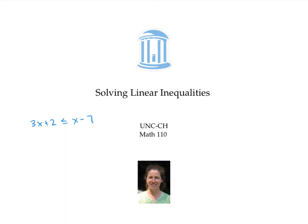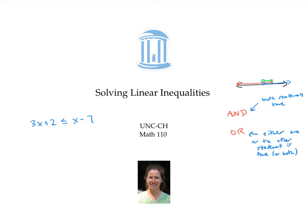In this video, we solved linear inequalities, including compound inequalities joined by and and or. When working with and, we're looking for the overlap on the number line — the points colored both red and blue at the same time. When working with or, we're looking for anywhere either statement is true, corresponding to points colored either red or blue or both, which in some cases covers the entire number line.